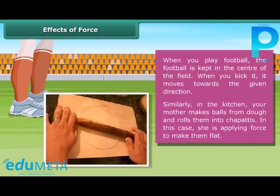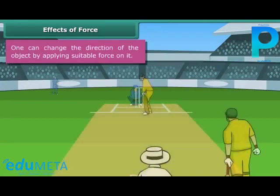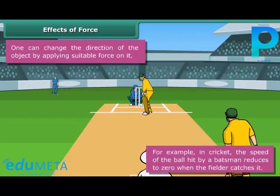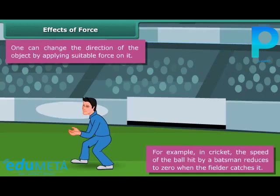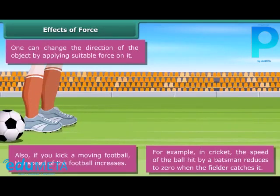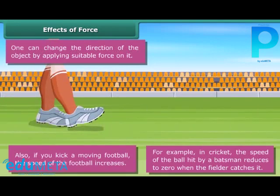Similarly, in the kitchen, your mother makes balls from dough and rolls them into chapathis. In this case, she is applying force to make them flat. One can change the direction of an object by applying suitable force on it. For example, in cricket, the speed of the ball hit by a batsman reduces to zero when the fielder catches it. Also, if you kick a moving football, the speed of the football increases.